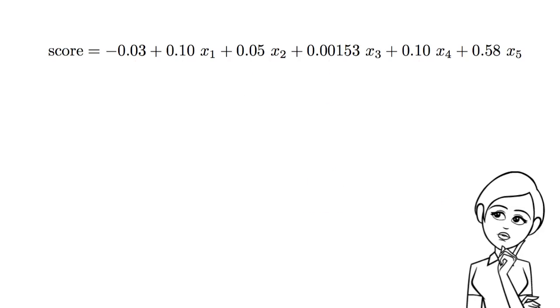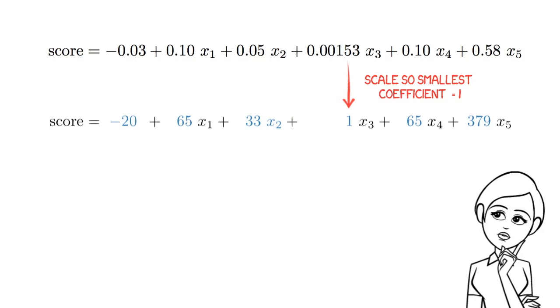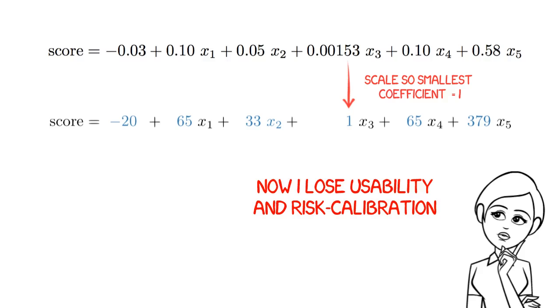Scaling before rounding keeps variables, but it also results in large coefficients. This reduces the usability of the model. It also reduces calibration by shifting risk estimates to extreme values. These are only some of the issues that make it hard to build a good risk score.